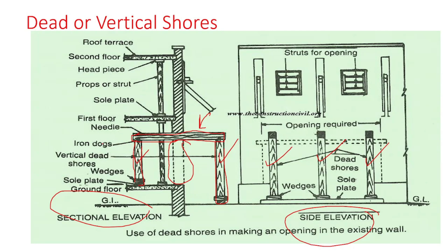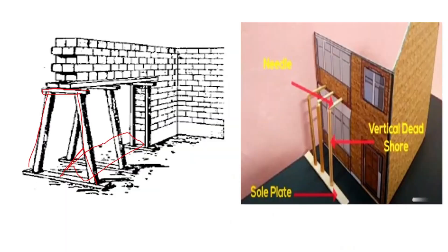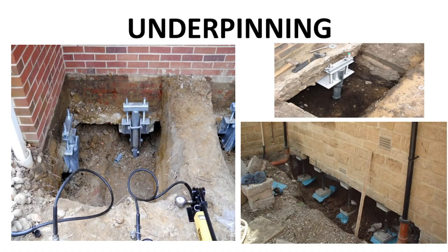That is all about dead shoring or vertical shoring. To summarize the types of shoring: raking or inclined shoring, flank or horizontal shoring, and dead or vertical shoring. In the next lecture, we will cover underpinning and the methods of underpinning.